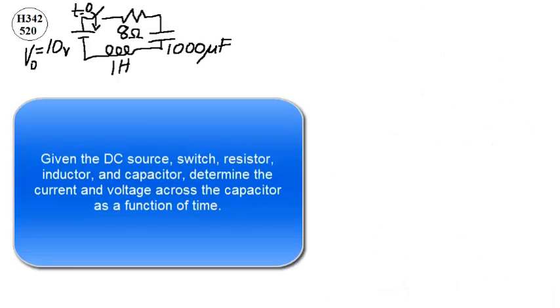Given the DC source, switch, resistor, inductor, and capacitor, determine the current and voltage across the capacitor as a function of time.